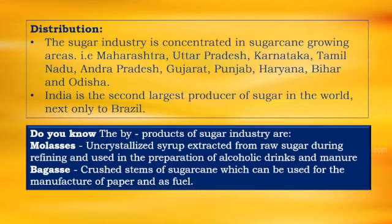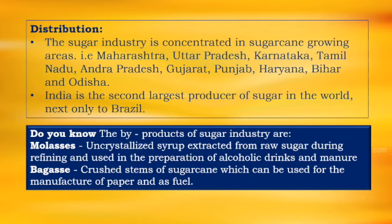Do you know? The byproducts of sugar industry — after extraction of sugar, whatever remains — also become raw material for manufacture of various products. There are two byproducts of sugar industry. One is molasses and the second one is bagasse. Molasses is the uncrystallized syrup extracted from raw sugar during refining and it is used in the preparation of alcoholic drinks and manure. Bagasse is crushed stems of sugarcane; when we crush the sugarcane and extract the juice, the remaining crushed stem part is called bagasse, which can be used for the manufacture of paper and also as fuel.